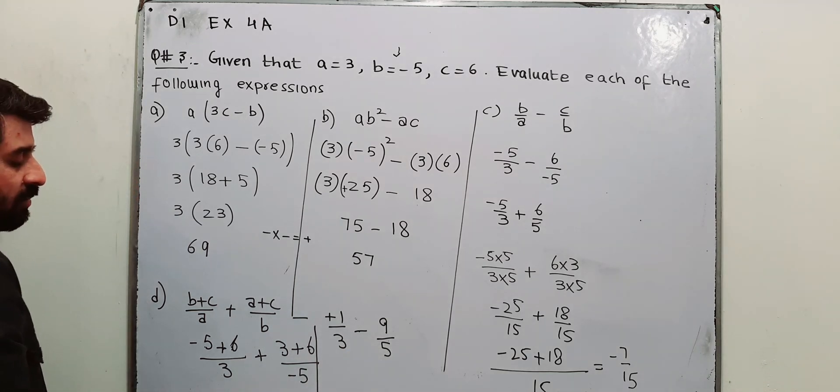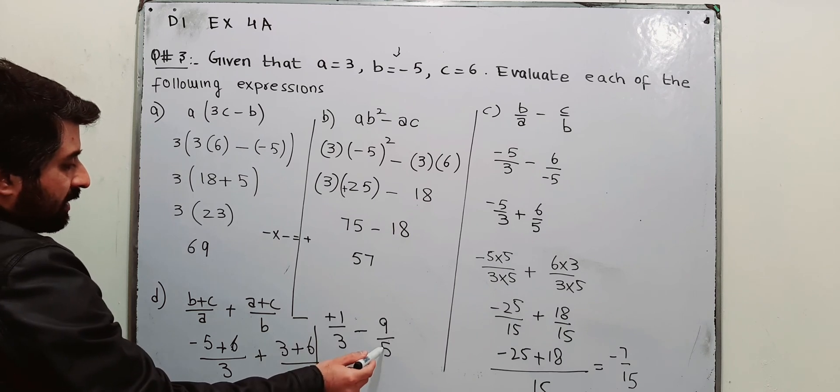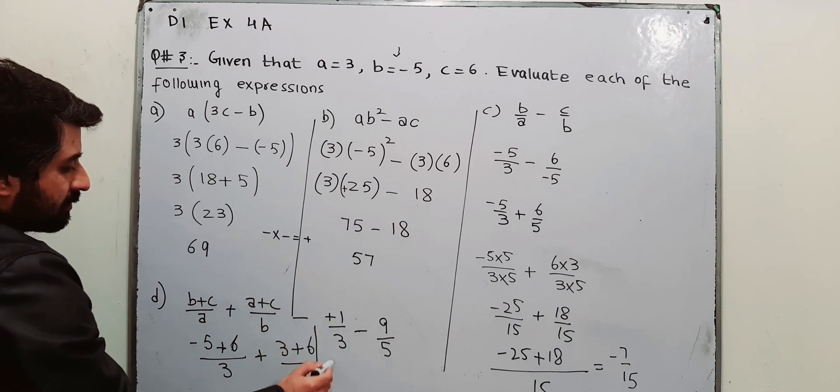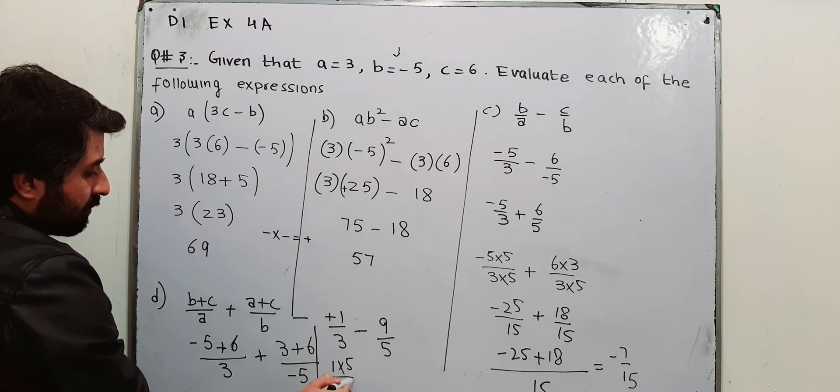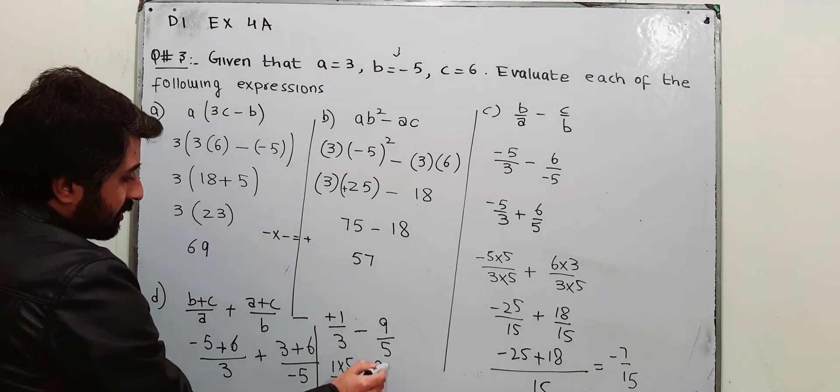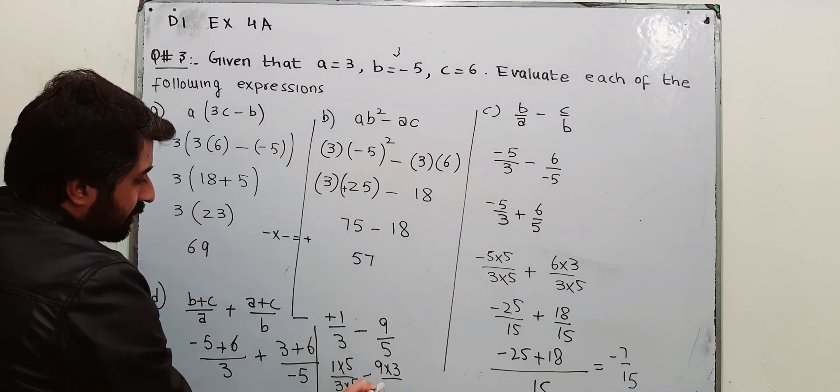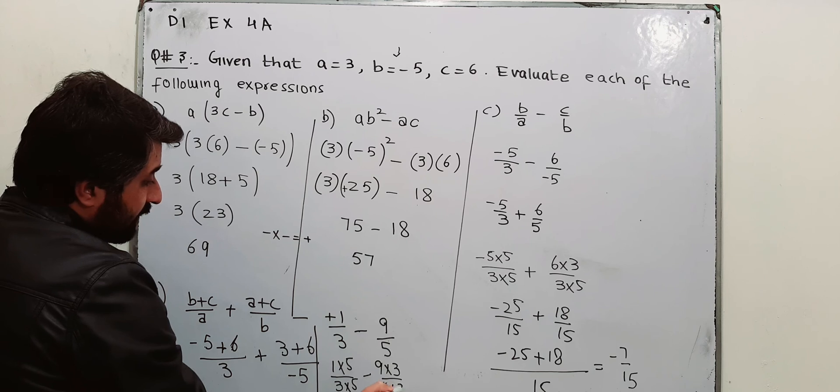Make the denominator same. Multiply this 5 with this fraction. 1 into 5, 3 into 5. And multiply this 3 with this denominator with this fraction. 9 into 3 and 5 into 3.